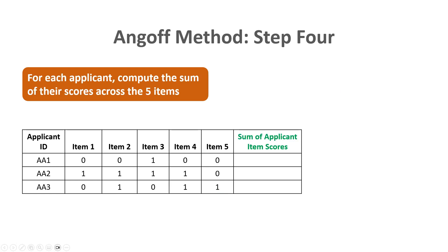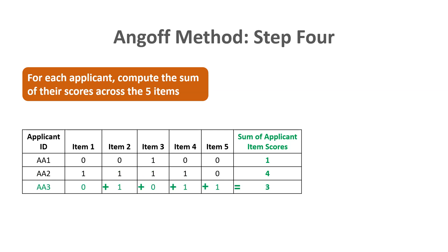For each applicant, we compute the sum of their scores across the five items. Applicant AA1's sum is 1, having correctly answered only one of five items. Applicant AA2's sum is 4, having correctly answered four of five. Applicant AA3's sum is 3, having correctly answered three of five items.